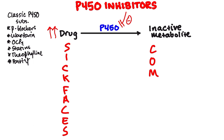The S stands for sulfonamides. This is very important — remember when we talked about the inducers, there was an S and it sounded very similar. The inducer is sulfonylurea — totally different drug, totally different class. Sulfonylureas are for diabetes. Sulfonamides are antibiotics.